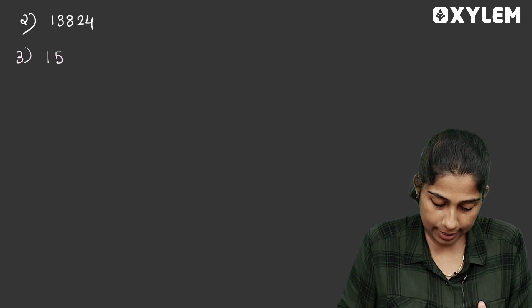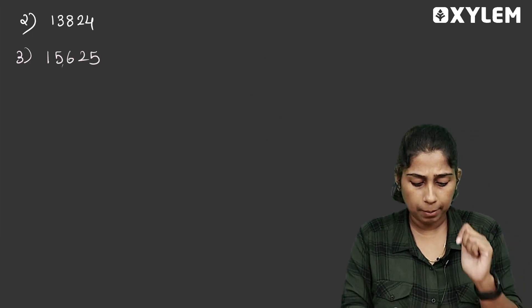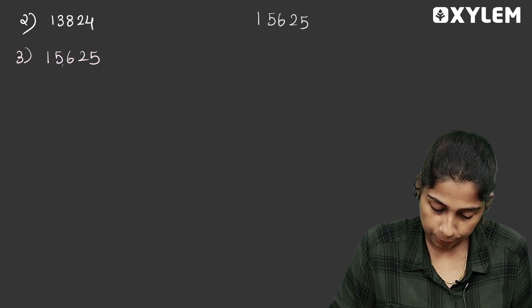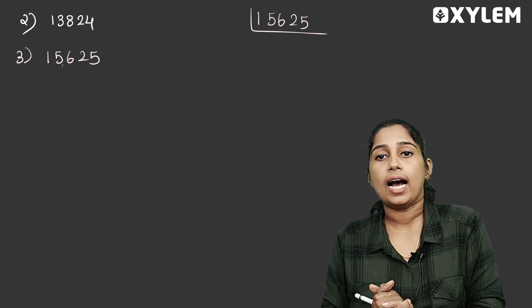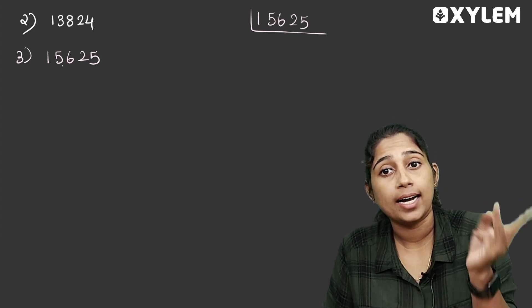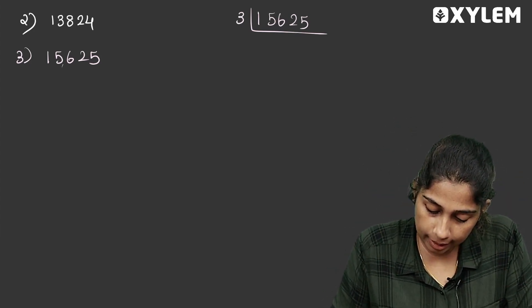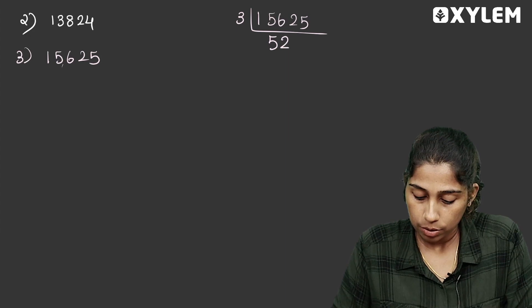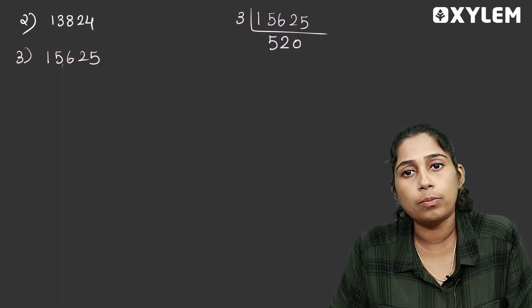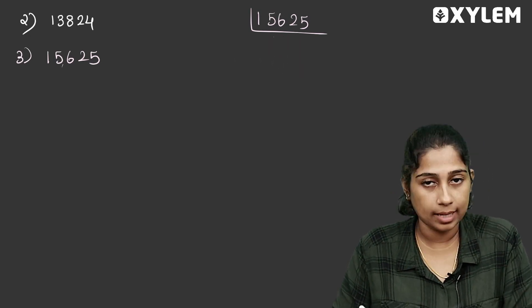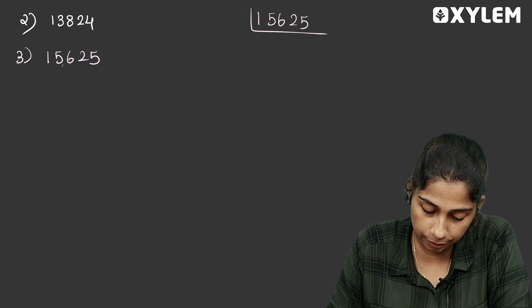This number is 15,625. This number is 15,625. This is the prime factorization of 15,625. This number is not an even number. We are working through 15,625.